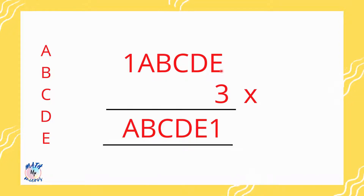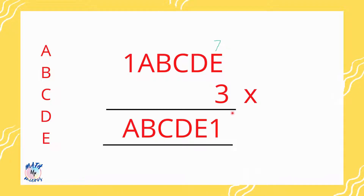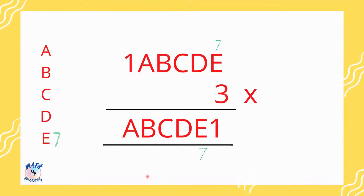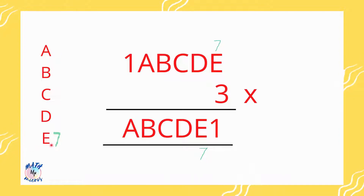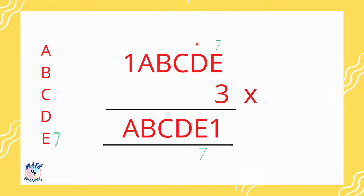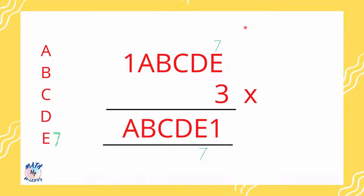So I am going to assume e to be 7. If e is 7, I can see there is another e in the answer as well, so that should also be 7. I have represented the 7 in the answer for e and noted it here. Now let's start multiplying. 7 times 3 is 21, so 1 is written down and 2 is carried over.